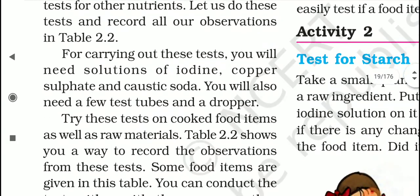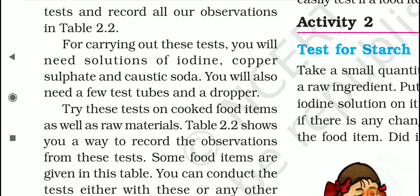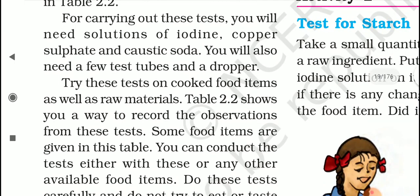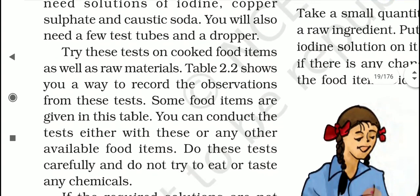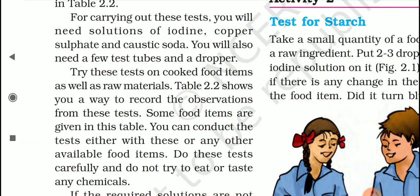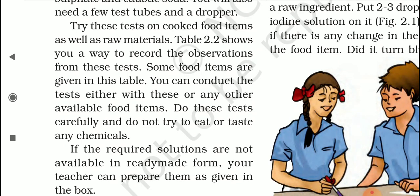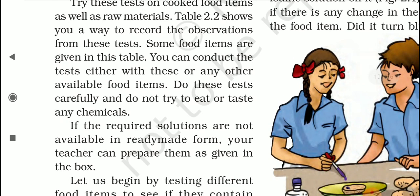For carrying out these tests, you will need solutions of iodine, copper sulphate, and caustic soda. You will also need a few test tubes and a dropper. Try these tests on cooked food items as well as raw materials. Table 2.2 shows you a way to record the observations. Some food items are given in this table — you can conduct the test with these or any other available food items. Do these tests carefully and do not try to eat or taste any chemicals, because some chemicals are very harmful for our body. We should take care while doing these experiments.